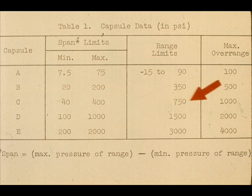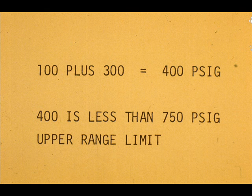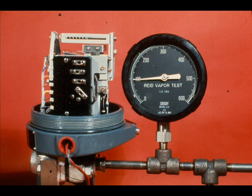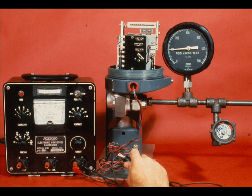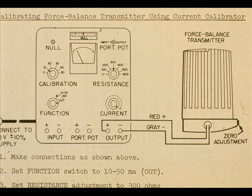The upper range limit for capsule C is 750 PSIG. Therefore, it is okay to use for the range 100 to 400 PSIG. We are finally ready to calibrate. Apply 100 PSIG to the transmitter. Connect the Foxborough 8121 or equivalent calibrator to the transmitter. Set it for calibrating a 10 to 50 milliamp force balance transmitter.